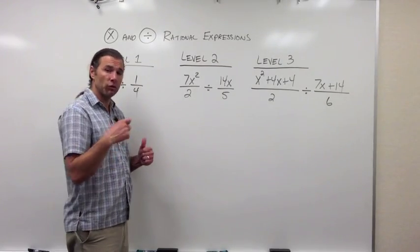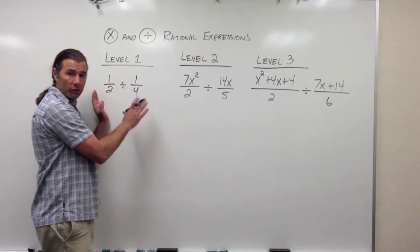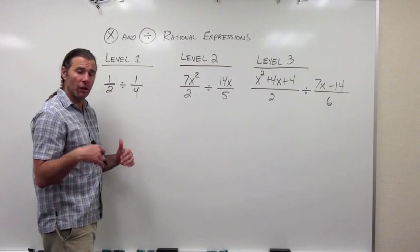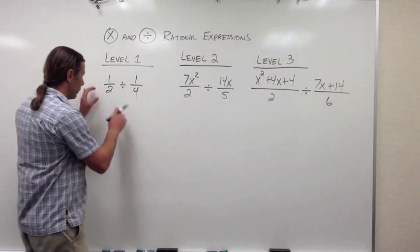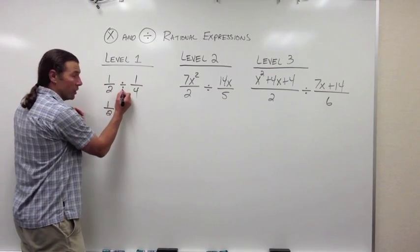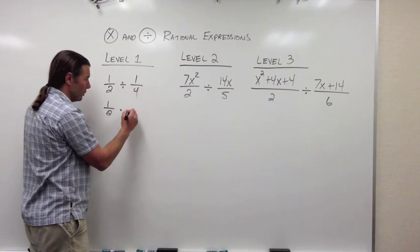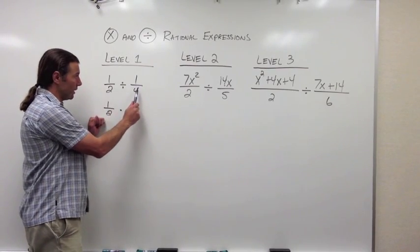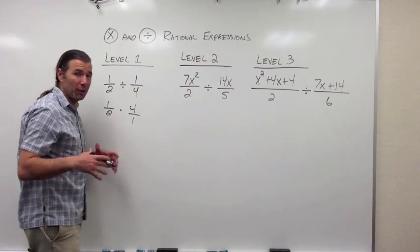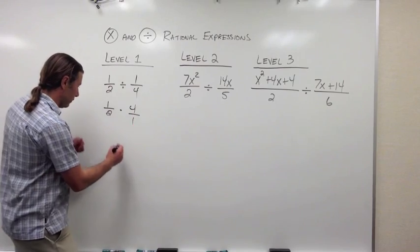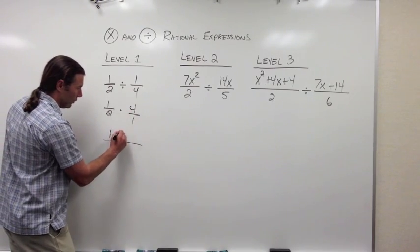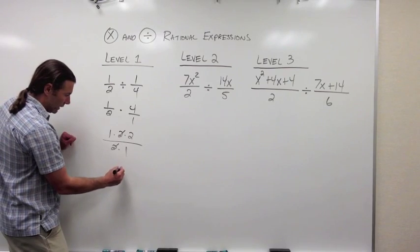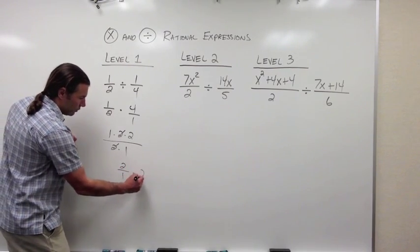Now let's look at division, starting with level 1 using regular fractions. With division, we don't perform it as a division problem — we change it first to multiplication by multiplying by the reciprocal. So 1 half stays the same, division changes to multiplication, and I take the reciprocal of 1 fourth, which is 4 over 1. Another way to remember: skip, flip, multiply — skip the first one, flip the second, change to multiplication. Then we factor: 1 times (2 times 2), over 2 times 1. Dividing out the common factor of 2 gives us 2 over 1, which equals 2.